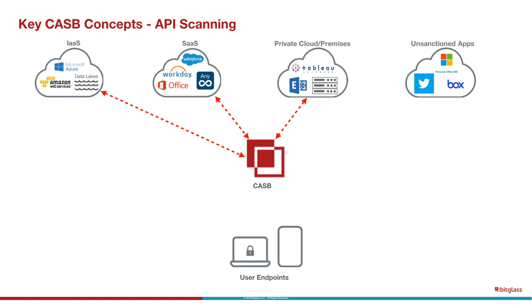The first method is API scanning. API scanning is the CASB programmatically reaching out and connecting to a sanctioned application and looking at things like the files in those applications to determine if they're shared externally, shared publicly, or if they contain data that you don't want in that cloud application, and then possibly taking some action around that file — maybe to remove sharing, encrypt the file, or move the file to a new location.